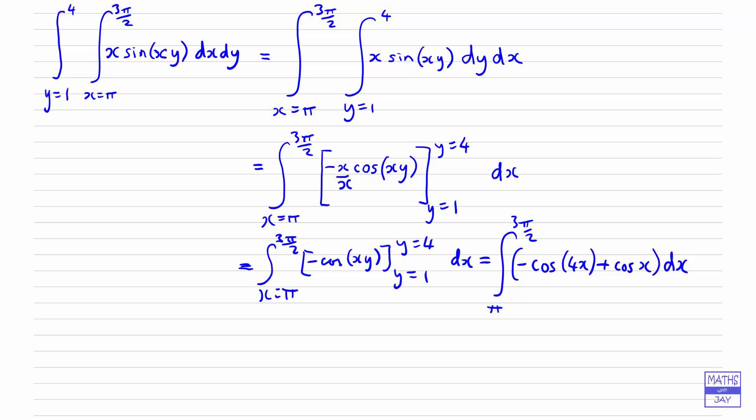So now we've got a straightforward integral to do. So integrating minus cos(4x), cosine integrates to sine, doesn't it? And we want to divide by 4, so it's minus a quarter of sine(4x), and then integrating cos gives us sine, and then we just need to put the limits in.